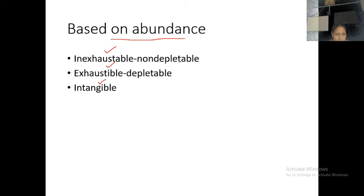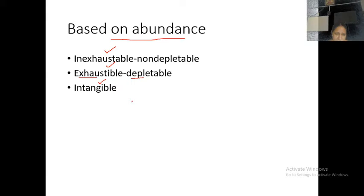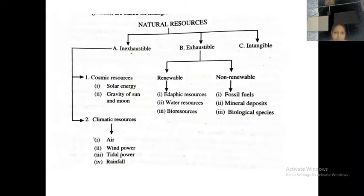So what is inexhaustible? That is non-depletable — just like our renewable resources. What about exhaustible? They are depleted, they are gone — just like fossil fuels and petroleum products. Intangible comes under both non-depleted and depleted ones. So natural resources can be classified into inexhaustible, exhaustible, and intangible.